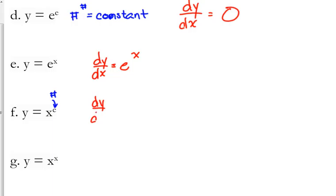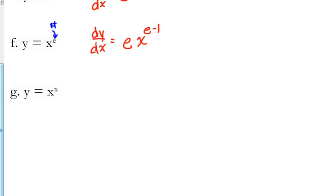What about y equals x to the e? How do we need to approach that? It's just the power rule, because your exponent is not a variable — your exponent is a number. So that is a power rule: bring down the exponent, keep the base, subtract one from the exponent. That's it.